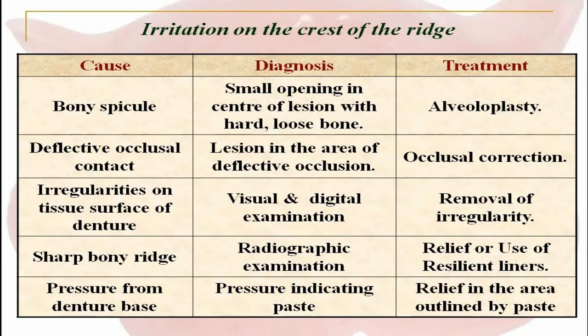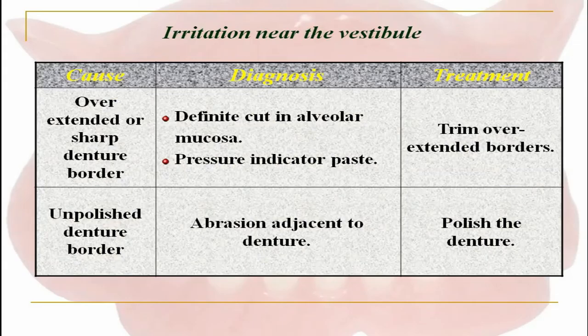Irregularities on the tissue surface of the denture are diagnosed by visual and digital examination, with removal of irregularities. If there is a sharp bony ridge, radiographic examination should be done and relief or use of resilient liners is necessary. Pressure from the denture base can be diagnosed using pressure indicating paste to identify where pressure is more, and relief in that particular area can be done.